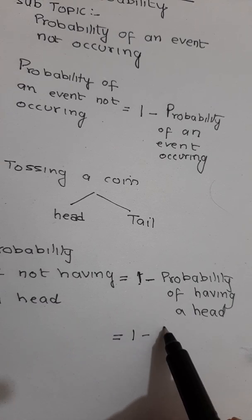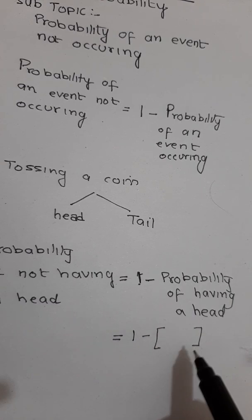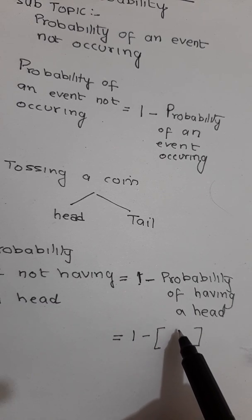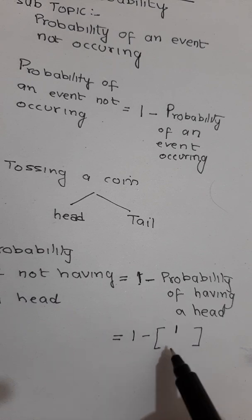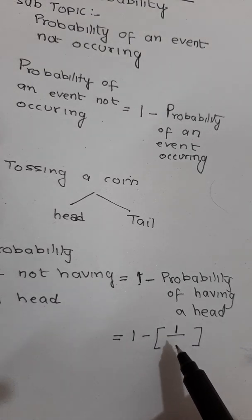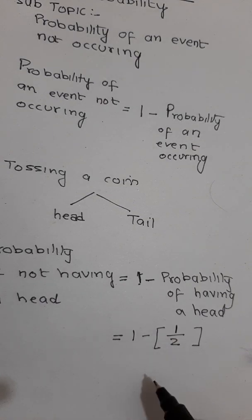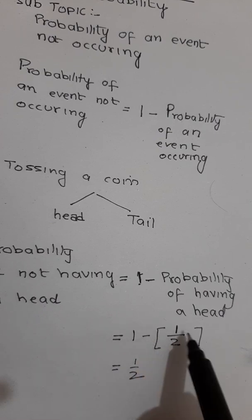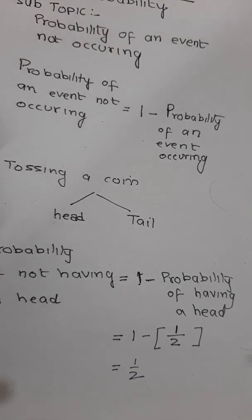The probability of having a head is well known. You can have a head one time in a toss while total number of outcomes are two: head and tail. So the answer is 1/2 because 1 - 1/2 = 1/2.